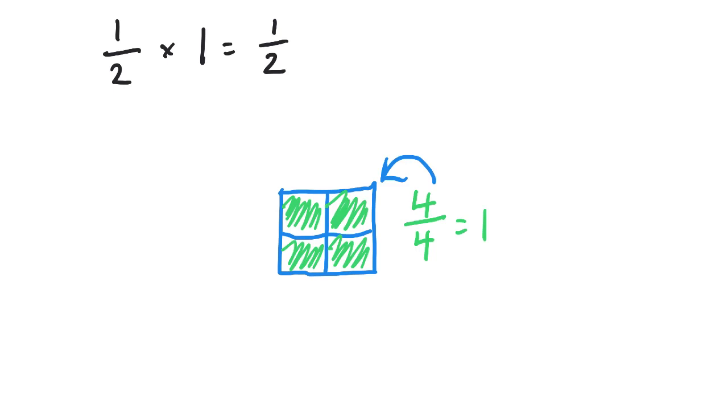So if we're multiplying 1 half times 4 fourths, it's the same as multiplying by 1. And if you've never done this before, to multiply fractions, you just go straight across and then straight across. So 1 times 4 is 4, 2 times 4 is 8. So 1 half is also equal to 4 eighths.